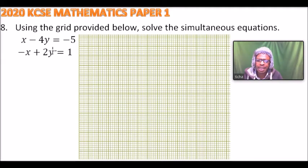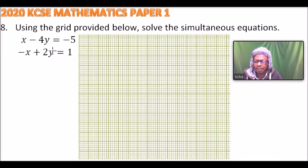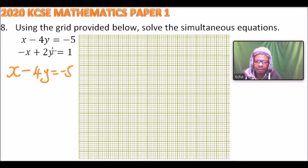These linear equations — you can rearrange them so that you have y on one side and x and the constant on the other side, or you can still work with them the way they are. We start by getting the values of the first one: x minus 4y equals minus 5.